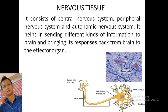The nervous tissue consists of the central nervous system, peripheral nervous system, and autonomic nervous system. It sends different kinds of information to the brain and brings responses back. You can see pictures of the nervous system — this is a neuron which we can observe in the microscope. The picture shows the nervous system with the nucleus, cell body, microtubules, microfilaments, and axons which make contact with other cells.